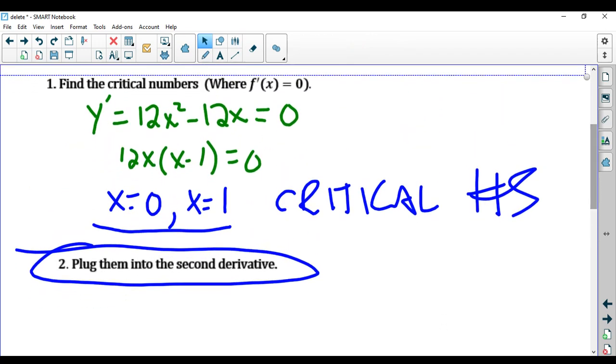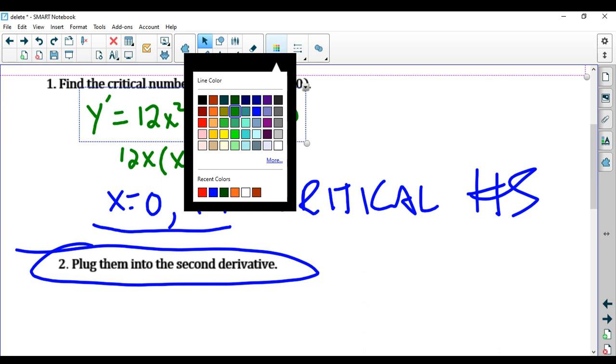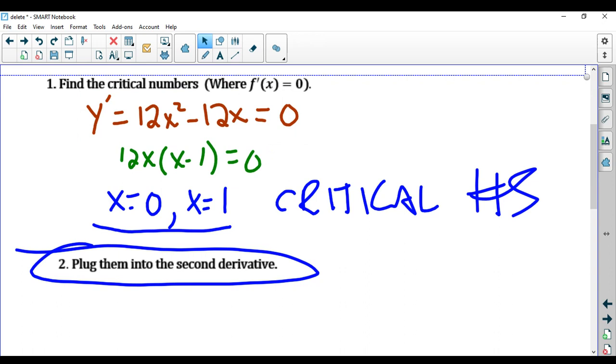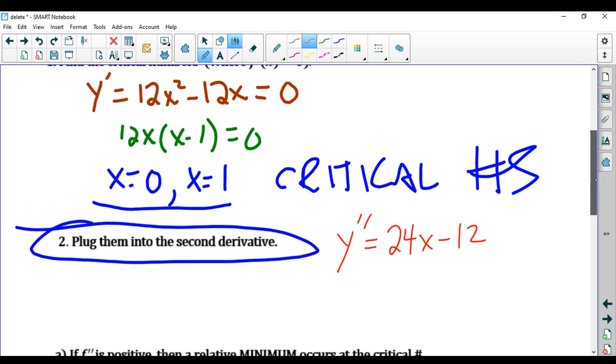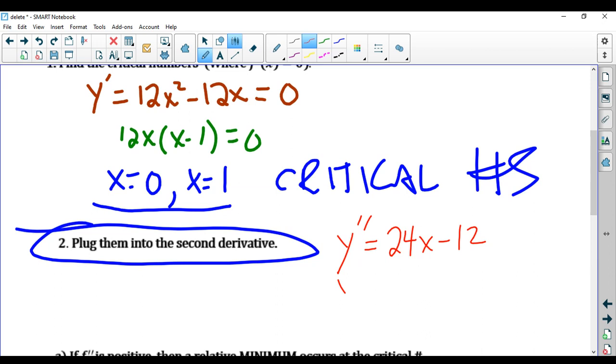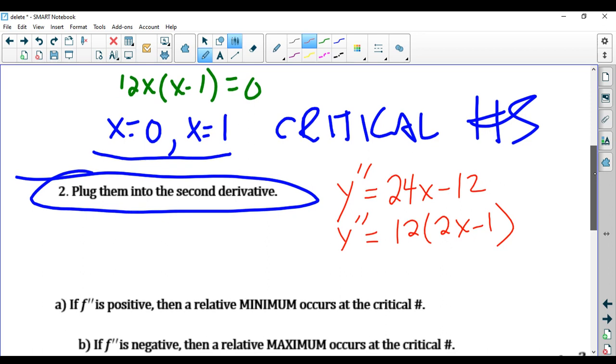The first derivative was up here. So the second derivative is going to be the derivative of the first derivative, which is y'' = 24x - 12. I'm going to factor that now. You don't have to, but I'm going to factor it just to make it easier to calculate if this is positive or negative when I plug in the critical numbers. So that's the second derivative.